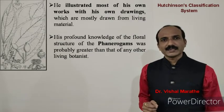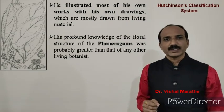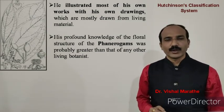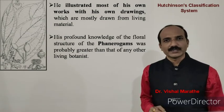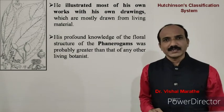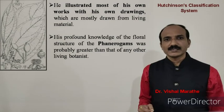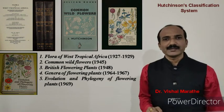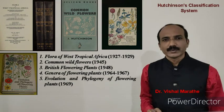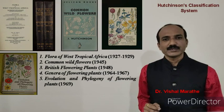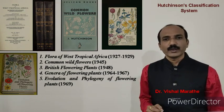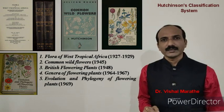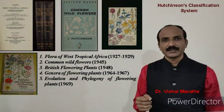He illustrated most of his own work with his own drawings, which are mostly drawn from living material. His profound knowledge of the floral structure of phanerogams was probably greater than that of any other living botanist at that time. In addition to his classification system for angiosperms, Hutchinson also published valuable works such as Flora of West Tropical Africa (1927–1929), Common Wild Flowers (1945), British Flowering Plants (1948), Genera of Flowering Plants (1964–1967), and Evolution and Phylogeny of Flowering Plants (1969).